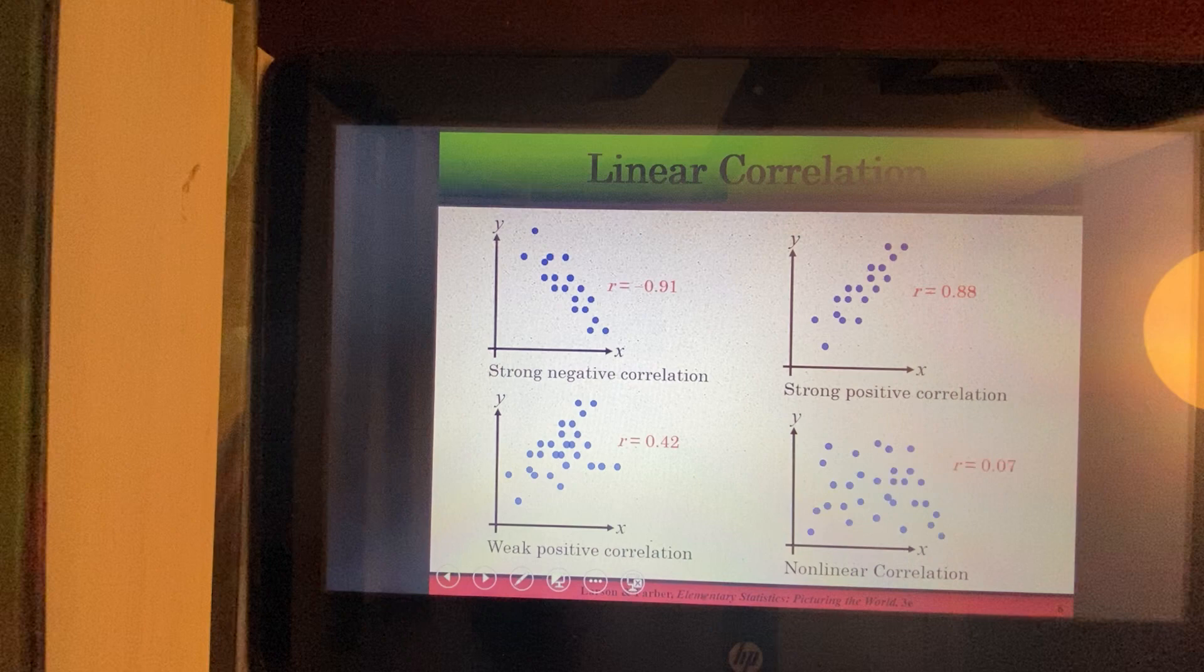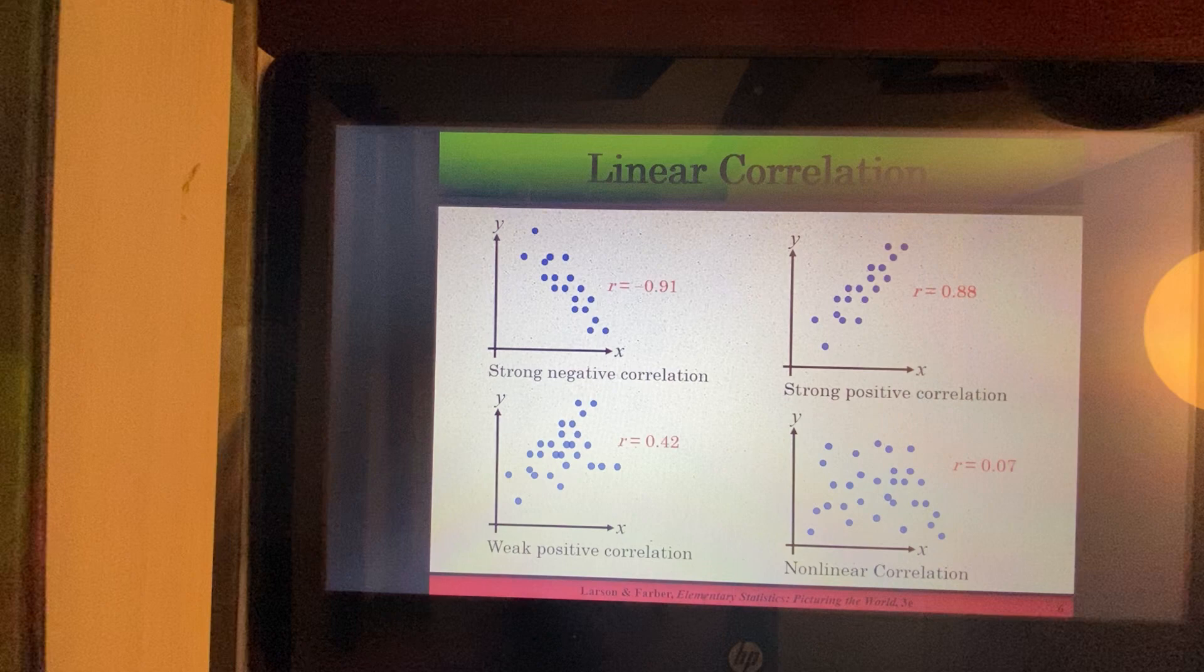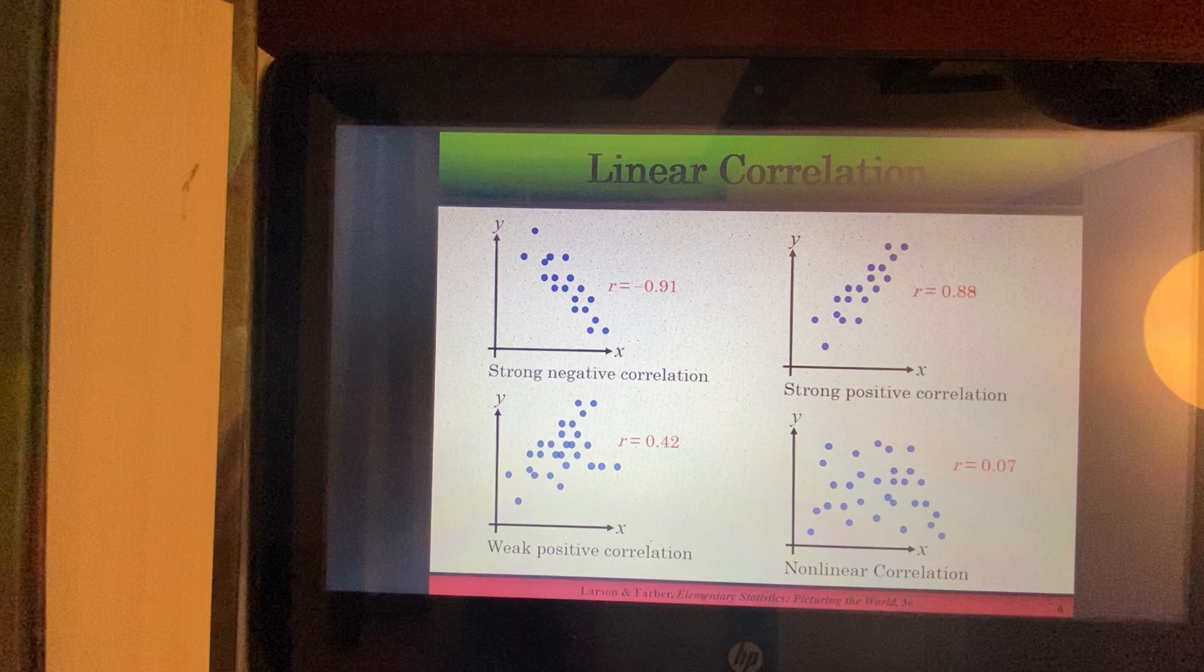And finally, here we're looking at nonlinear correlation. The points are like just all over the place. So because it doesn't look like we have a relationship between X and Y, R is really close to 0, 0.07.